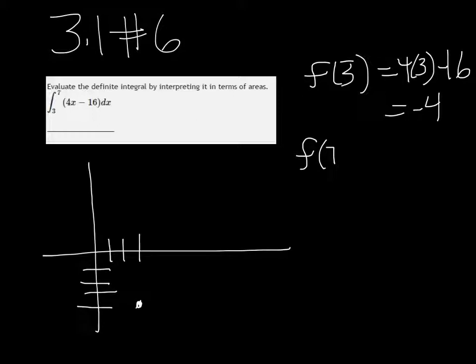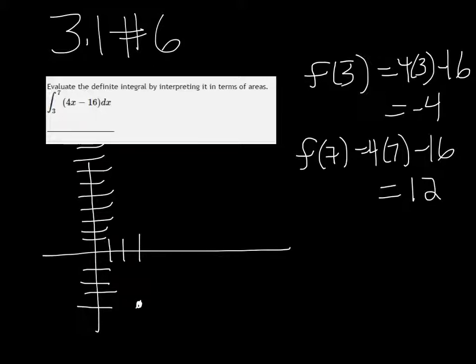And then f of 7, 4 times 7 minus 16 is equal to 12. So 1, 2, 3, 4, 5, 6, 7, 8, 9, 10, 11, 12. Let's see, and then 4, 5, 6, 7. So our second point I'm going to put in blue is right about here.